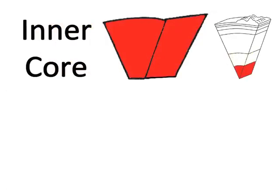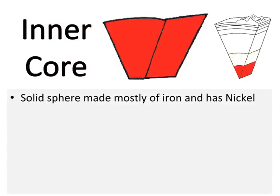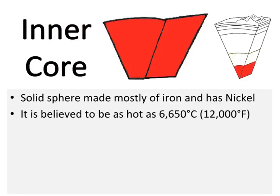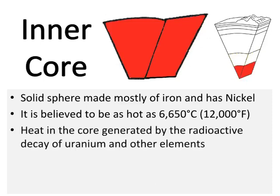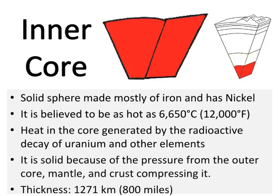The inner core is a solid sphere made mostly of iron and nickel. It is believed to be as hot as 6,650 degrees Celsius — 12,000 degrees Fahrenheit. Heat in the core is generated by radioactive processes. It is solid because of the pressure from the outer core, mantle, and crust compressing it. Its thickness is 1,271 kilometers — 800 miles.